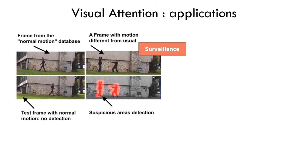But why work on visual attention apart from science? For application of course. You have here an example of video surveillance, where suspicious areas — like a person pointing a gun at another — are detected because they are very different from what usually happens at that place, like people walking in different directions. So when you find something unusual, surprising, this should attract your attention, and in video surveillance this is very important.